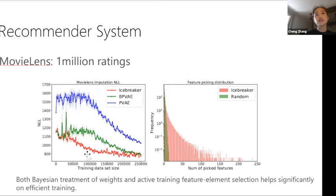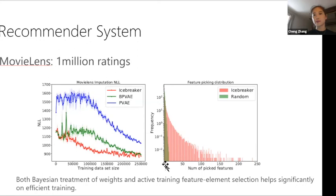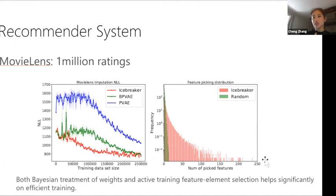In the bar plot showing how many times each feature is picked: random collection produces a uniform distribution (concentrated around the expected count per feature), while Icebreaker produces a long-tail distribution. This is because we want to learn both feature relationships (column-wise) and user statistics (row-wise), so for some rows we pick many features and others we don't. With a fixed budget, we explore both column-wise and row-wise to achieve the best performance with minimum data collected.